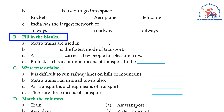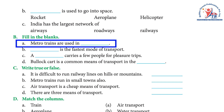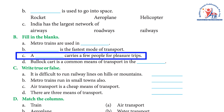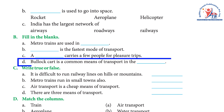Exercise B: Fill in the blanks. A) Metro trains are used in blank. Answer: metropolitan cities. B) Blank is the fastest mode of transport. Answer: air transport. C) A blank carries a few people for pleasure trips. Answer: yacht. D) Bullock cart is a common means of transport in the blank. Answer: villages.